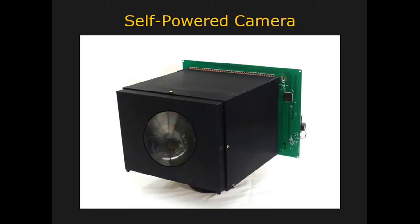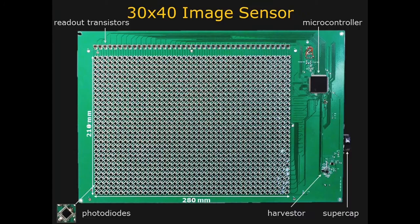To make the prototype camera, the research team bought off-the-shelf photodiodes and arranged them in a 30 by 40 array on a printed circuit board.